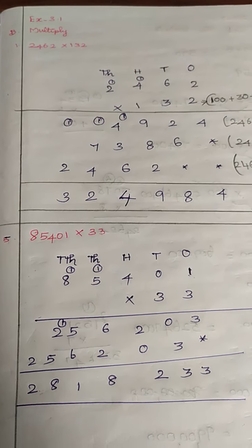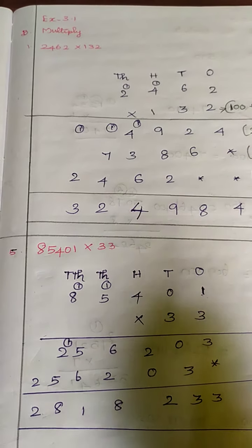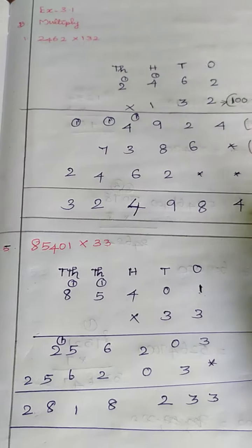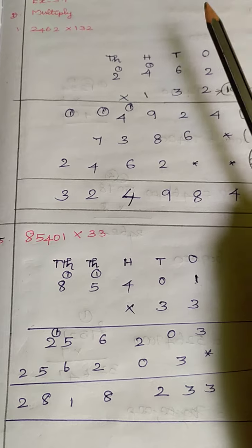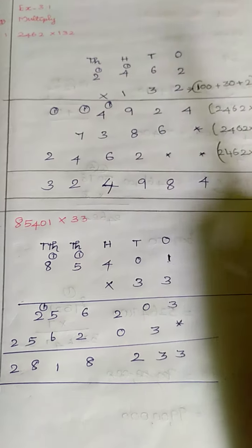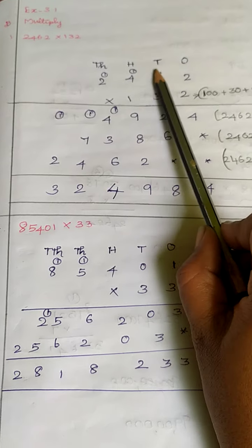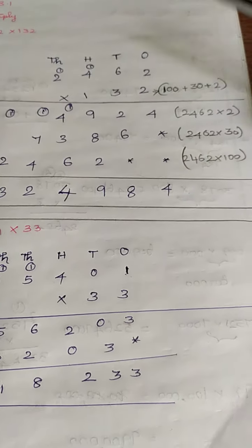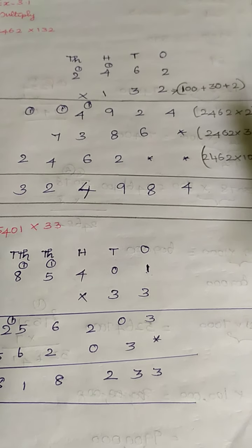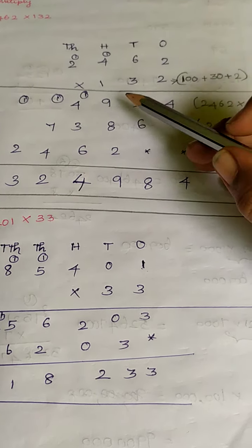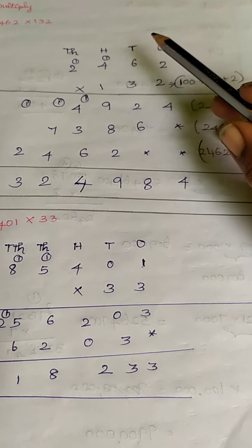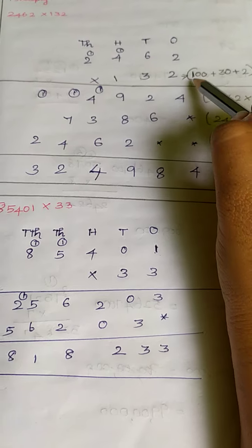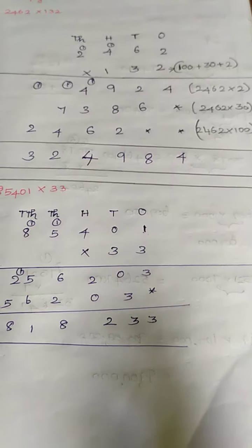Your first problem: 2462 multiplied by 132. You all know the place value chart. Here you have 4 digits, so your place value chart will contain up to 1000 — 1s, 10s, 100s, 1000. So 2462 multiplied by 132 is your question. 132 — you know how to write it in expanded form: 2 in the 1s place, 3 in the 10s place means 30, and 1 in the 100s place means 100. So it is 100 plus 30 plus 2.